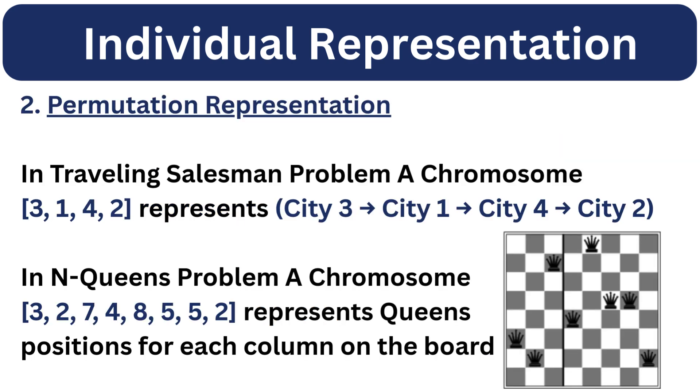But for some problems like the traveling salesman problem, we use permutation representation. Here a chromosome like 3142 means we visit the cities in the order city 3, city 1, city 4, and city 2. Or take the example of N-queens problem. A chromosome like 32748552 could represent queen's positions. Each value tells us the row number where the queen is placed in each column.